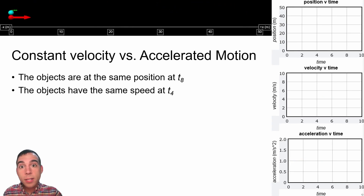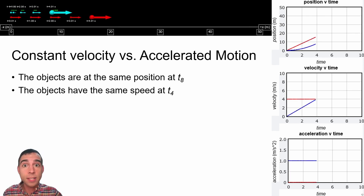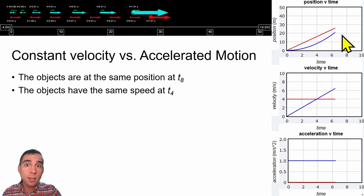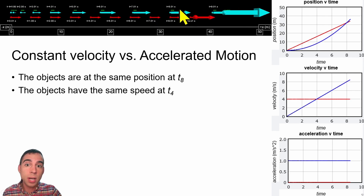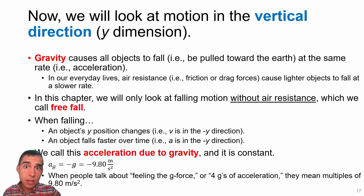Let's look back on the example from the very beginning of this lecture, where we had one object moving at a constant velocity and another increasing its velocity over time. We can compare the position versus time graph to analyze and interpret when these two objects will end up crossing, which is at eight seconds. All of that motion applies in the horizontal situation—that's one-dimensional motion.